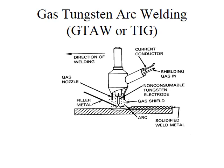Gas tungsten arc welding is an arc welding process in which the heat for welding is developed by an electric arc maintained between a non-consumable tungsten electrode and a workpiece. Protection from atmospheric contamination of the tungsten electrode, the filler metal, the weld puddle, and adjacent heated areas is achieved by a shielding gas — usually inert argon or helium — that flows from inside a cylindrical cup surrounding the electrode. In most applications it is a completely manual process where filler metal is fed into the weld puddle by the operator as required.